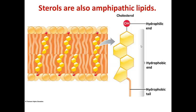In addition to phospholipids, there is another type of amphipathic lipid present within the membrane: the sterols. Here you can see cholesterol, which in mammalian cells is the most abundant sterol in the membrane. Cholesterol has a hydroxyl group on one end — the hydrophilic end — and then a hydrophobic ring structure followed by a tail. Because of this amphipathic nature, cholesterol orients similarly to the phospholipids: the hydrophilic end associates with the heads of the phospholipids, whereas the hydrophobic tail is embedded within the membrane bilayer.